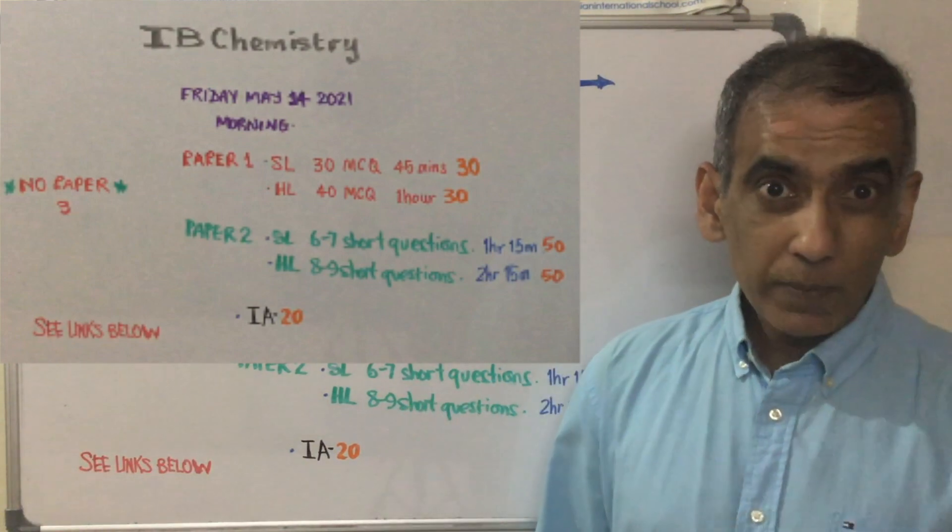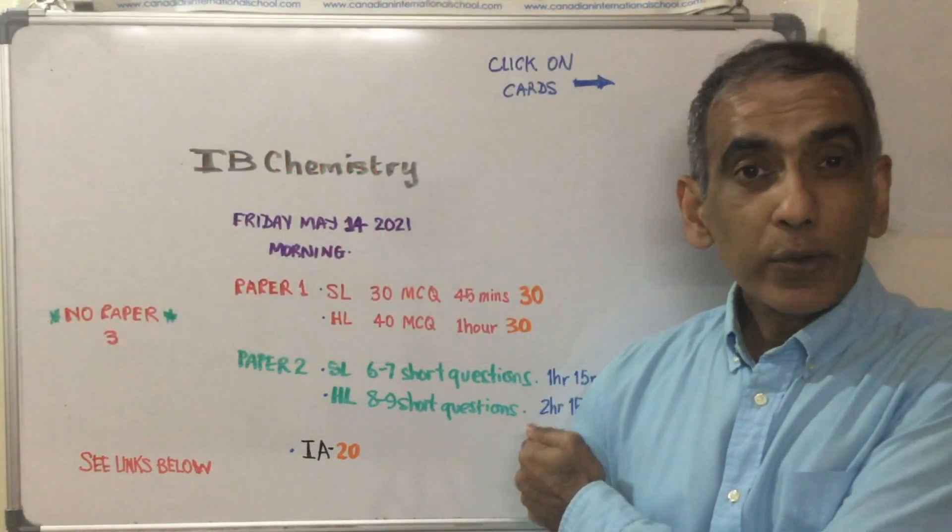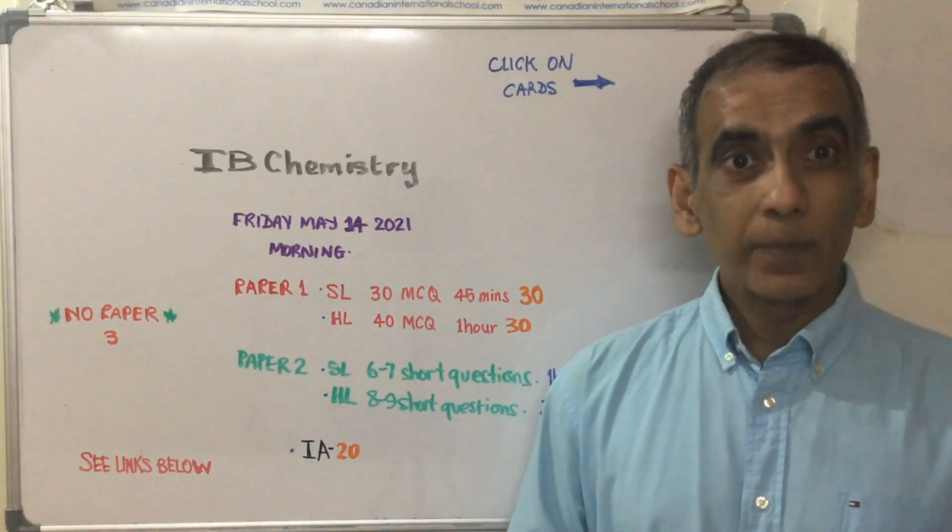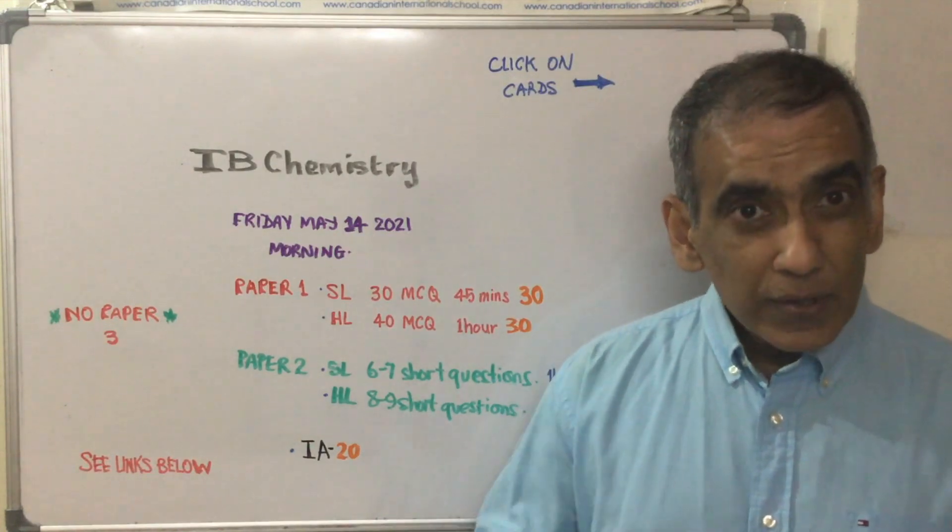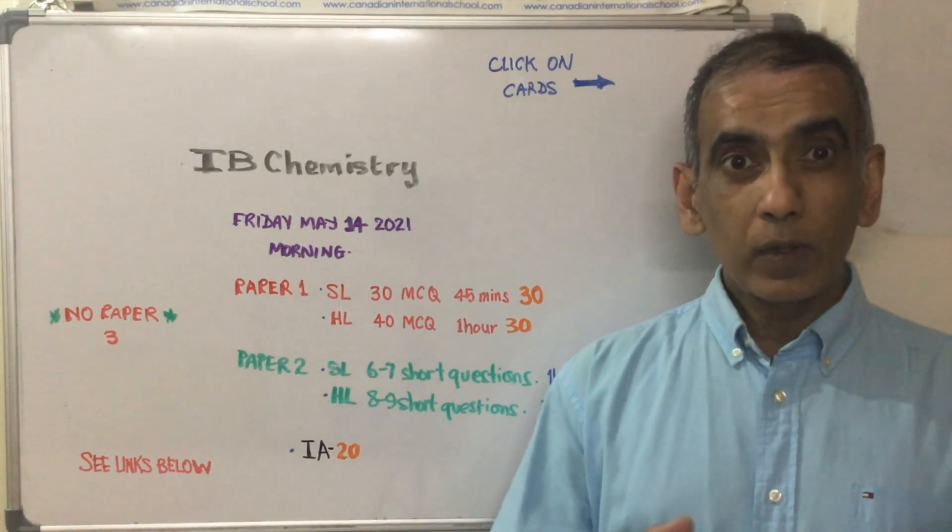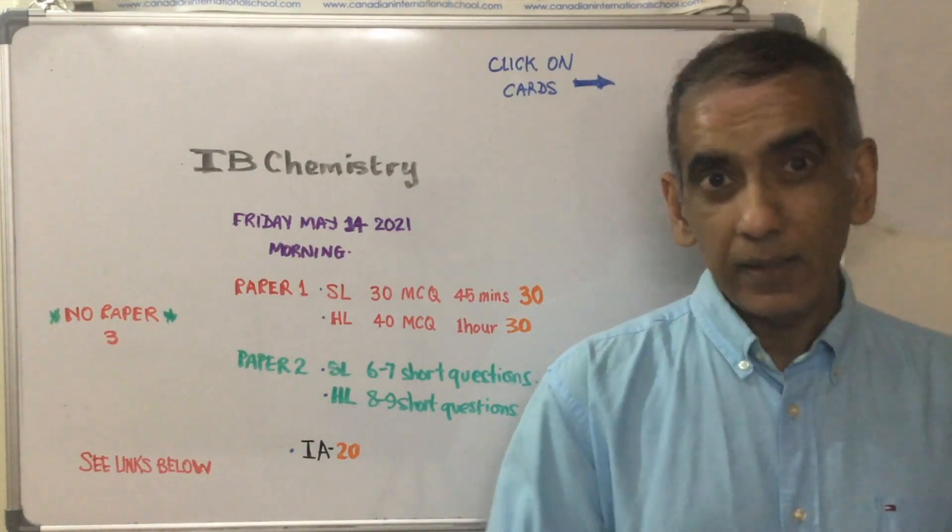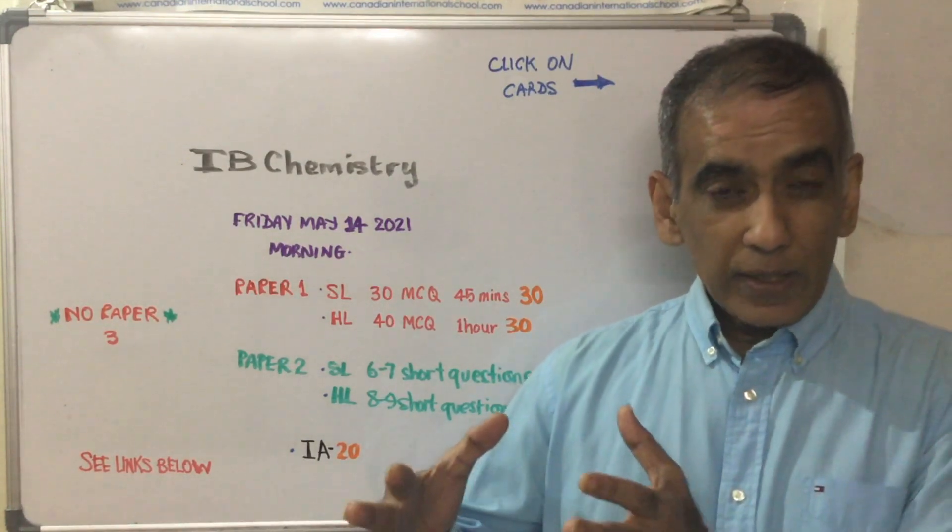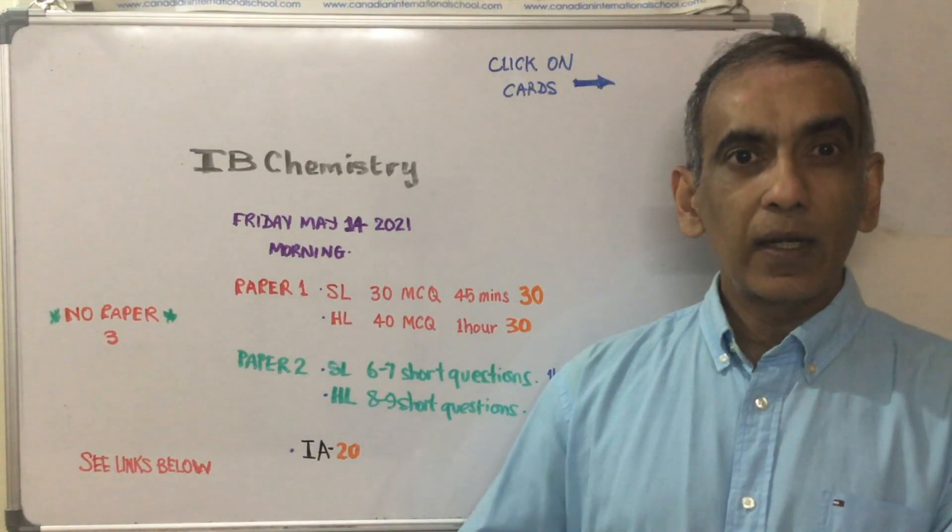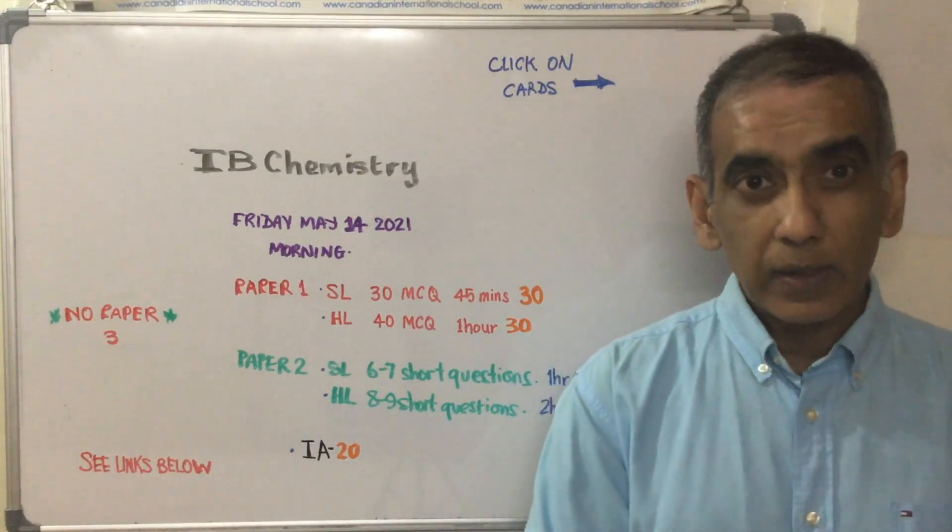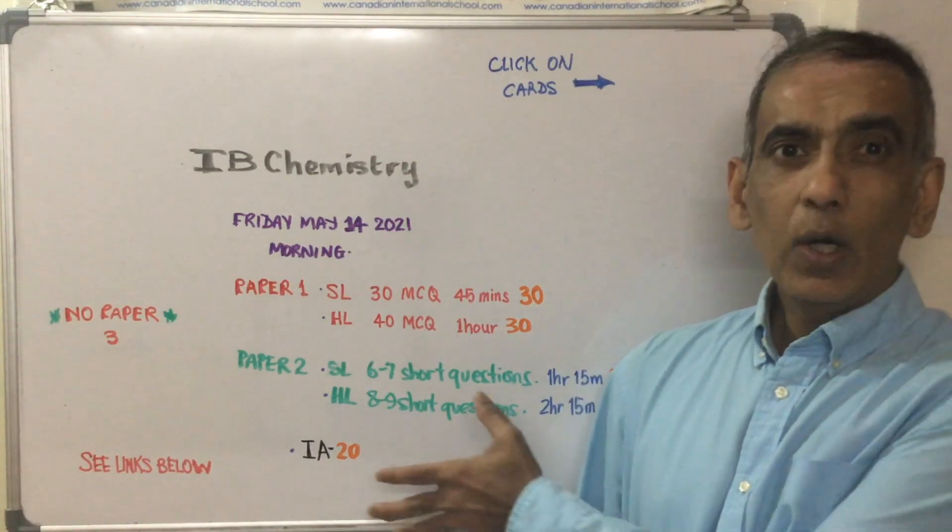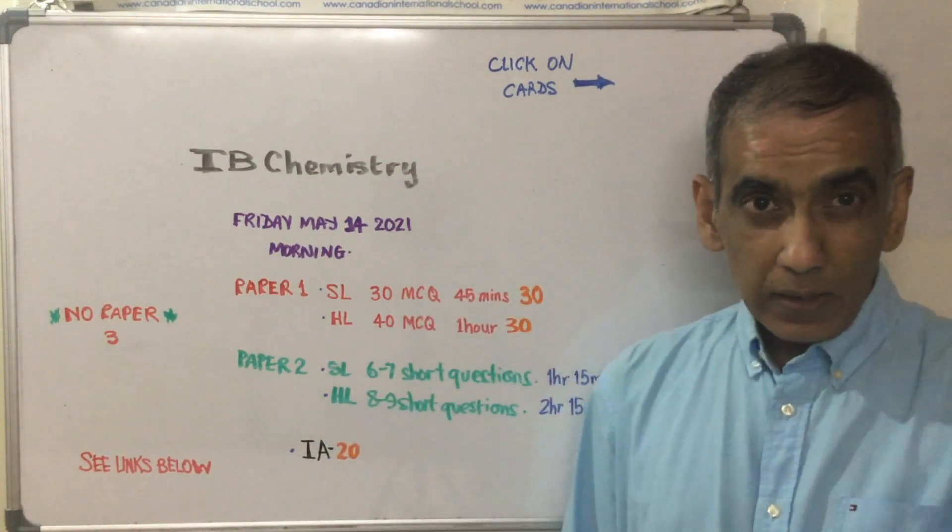Where's the other 20 percent going to come from? It's going to come from your internal assessment. And this year, just like last year, all of your internal assessment reports will be marked externally by the International Baccalaureate organization. So it's not like your teacher is going to mark a few of them and it's going to get moderated. All of them get marked by the IB. So this is how your hundred percent of your grade is going to come.